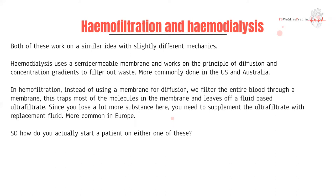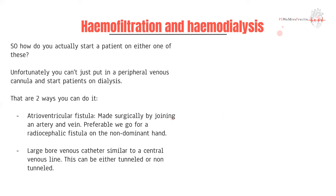Now consider how we actually start a patient on this. Let's say a patient comes in with a pH of 7.0 — you can't just insert a peripheral cannula and start dialysis, because the large volumes of fluid require much bigger access. There are two options: we can create a connection between an artery and a vein — a very high flow system — or we can insert a large bore cannula into a major vein.